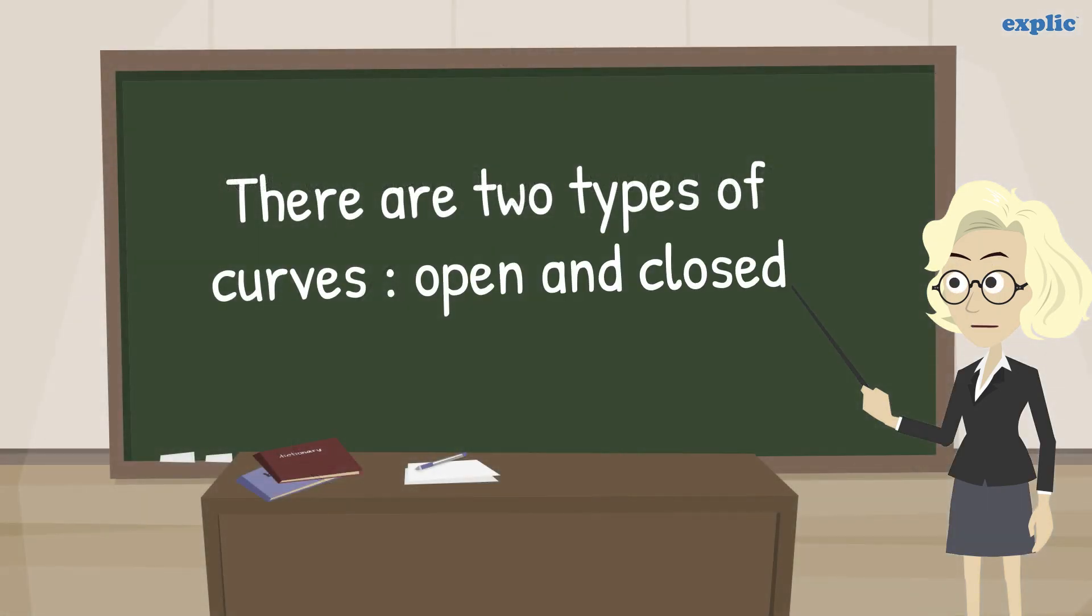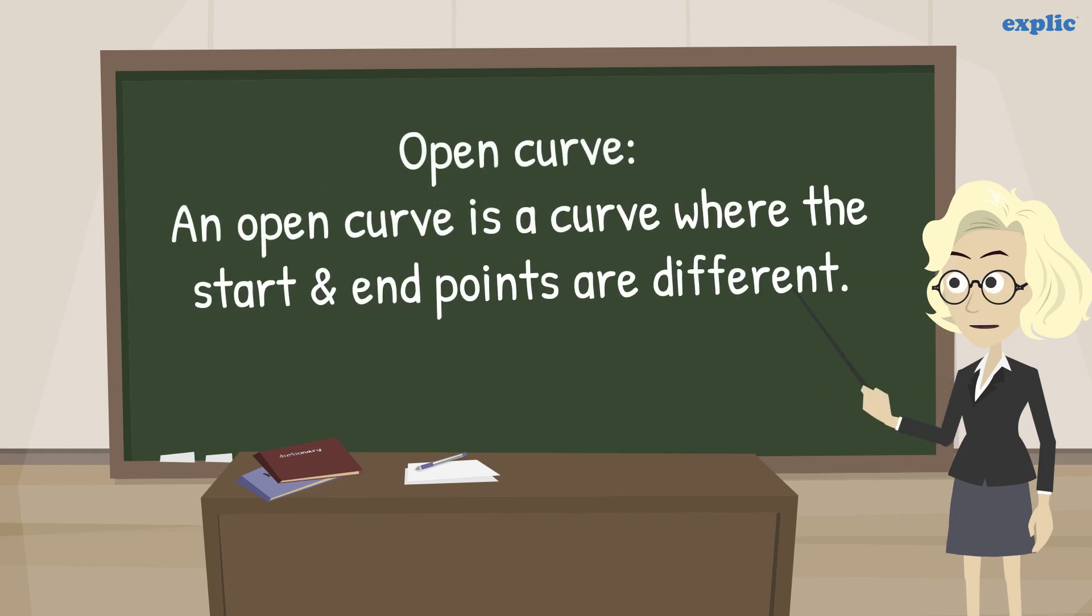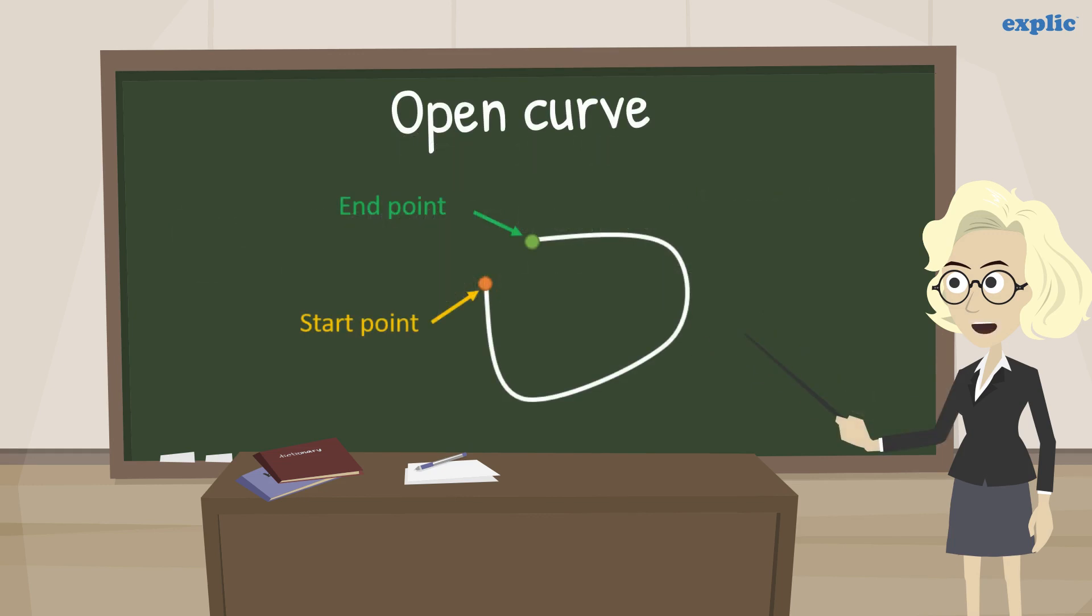There are two types of curves: open and closed. An open curve is a curve where the start and end points are different. In simple words, an open curve is open from any direction.